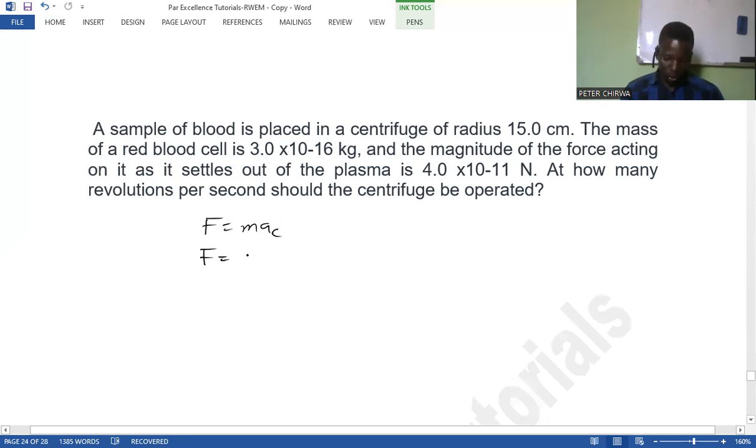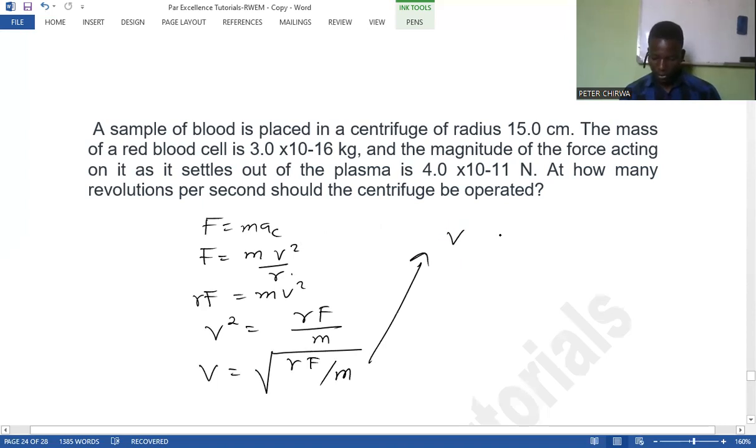So force is going to be the mass v squared over r. So I think this one is basically more straightforward. So it's going to be r times force over m squared. So v squared is going to be r times force over m. So v is basically the square root of that. So I'll write from here. So you can see that this is straightforward.